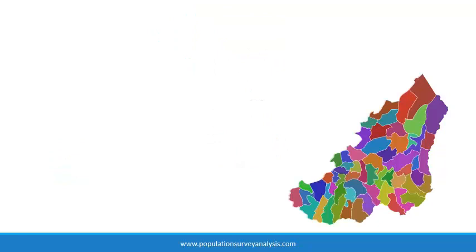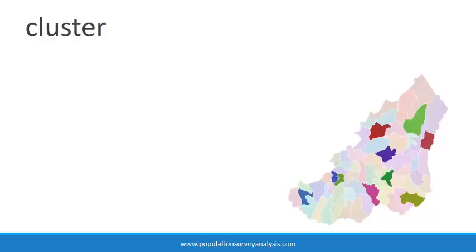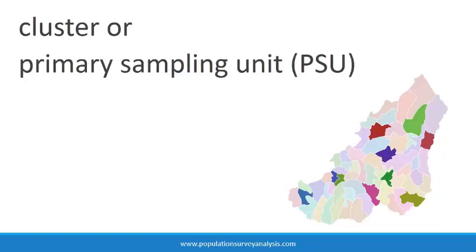For example, in the demographic and health surveys, enumeration areas from the census or similar national surveys are first selected randomly from a list of all such areas in the country, or within strata if stratification is being used. These areas are often referred to as clusters or primary sampling units. They may be towns or villages, or they may be census tracts in cities. Generally, each cluster contains roughly the same number of households.